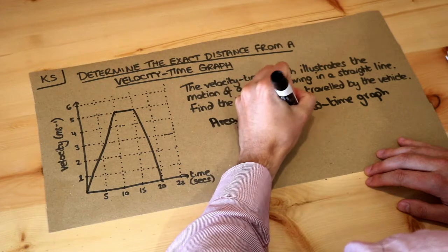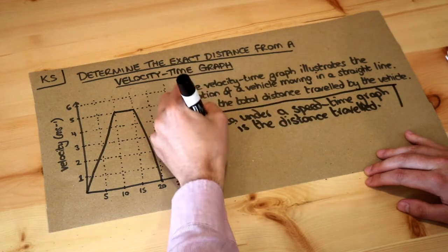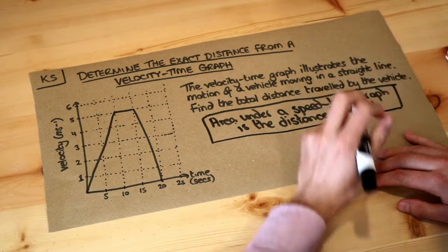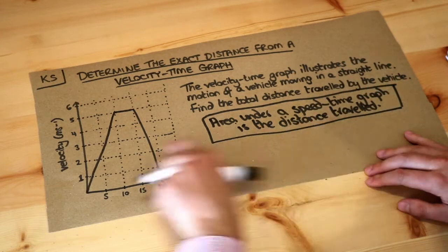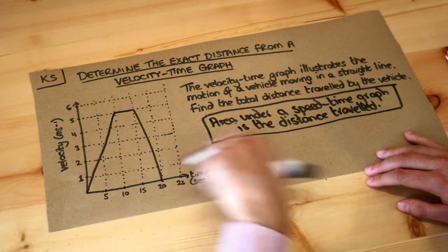And don't worry about why this works. So in order to find the distance travelled under this speed time graph we just need to find the area of this particular shape here.